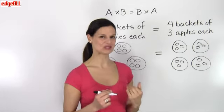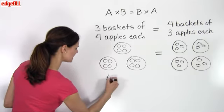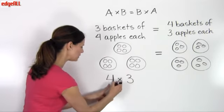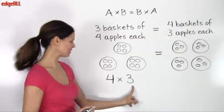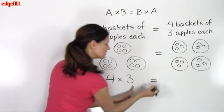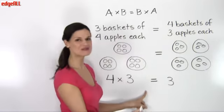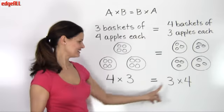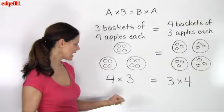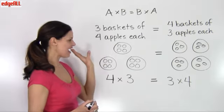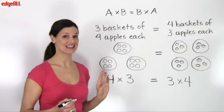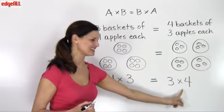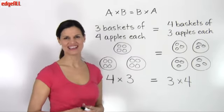Looking at this using multiplication, in this case I would say this is four times three, because I have four apples in three groups or three baskets. And that is equal to three apples per basket — three times four, four groups. But the whole idea of the commutative property of multiplication tells us that whether we do four times three, or switch them and do three times four, the product, the answer, is the same.